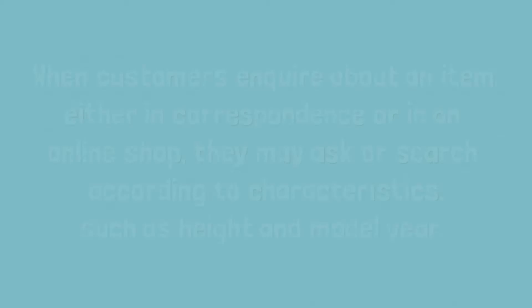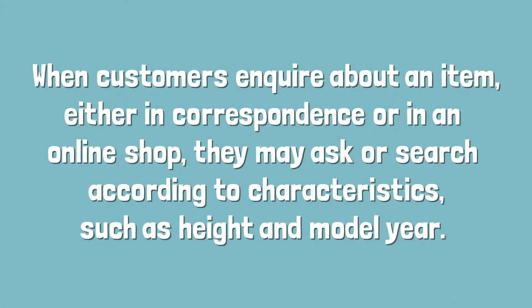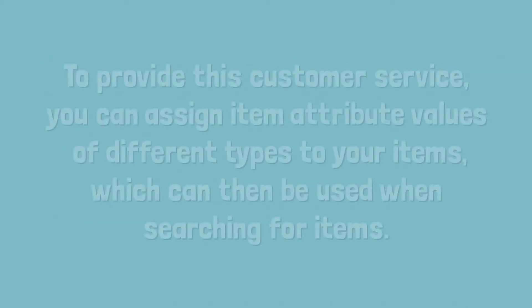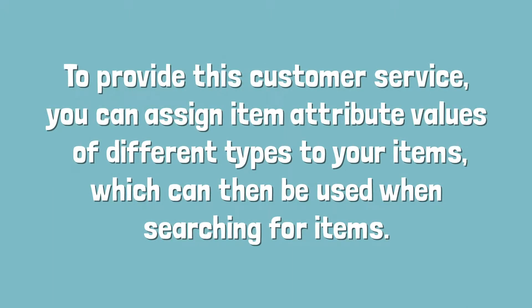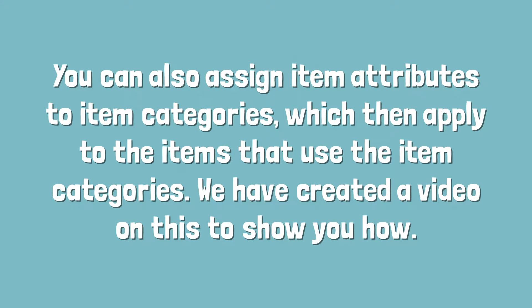When customers enquire about an item, either in correspondence or in an online shop, they may ask or search according to characteristics such as height and model year. To provide this customer service, you can assign item attribute values of different types to your items, which can then be used when searching for items. You can also assign item attributes to item categories, which then apply to the items that use the item categories.